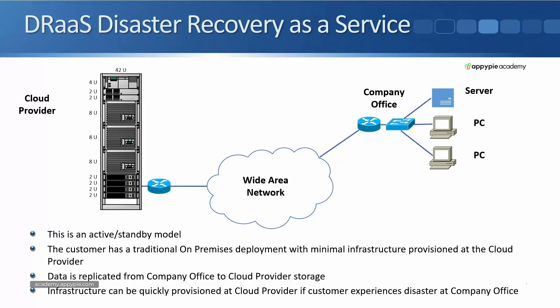Data is replicated from the company office to the cloud provider storage. If the company has a disaster at their office, they can quickly fail over to the cloud provider. For small or medium-sized companies, this can be a really attractive solution. They'd love to have a disaster recovery solution so they can get back up and running quickly, but building their own disaster recovery data center the traditional way would be hugely expensive. By using a cloud provider, they can get that capability at a much more feasible cost.